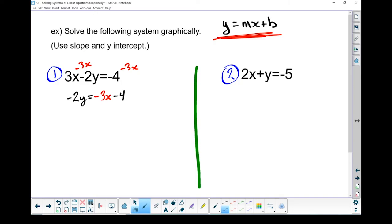Next step, I want to get y all by itself, so I'm going to divide everything by minus 2. What I'm left with is y, negative divided by the negative is a positive, leave it as a fraction, I've got 3 halves x, and minus 4 divided by minus 2 gives me plus 2.